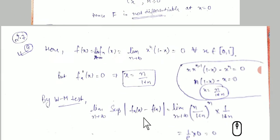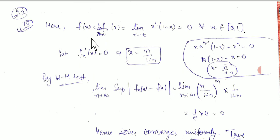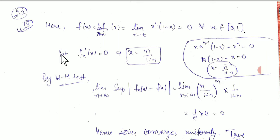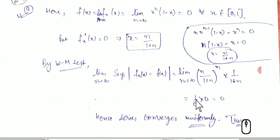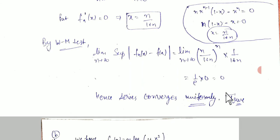For the first sequence, the pointwise limit f(x) = lim f_n(x) = 0 on [0,1]. We compute f_n'(x) to find the supremum using the Weierstrass M-test. Setting the derivative to zero gives x = n/(n+1). Substituting back, the supremum tends to 0 as n → ∞, hence the sequence converges uniformly. This option is true.